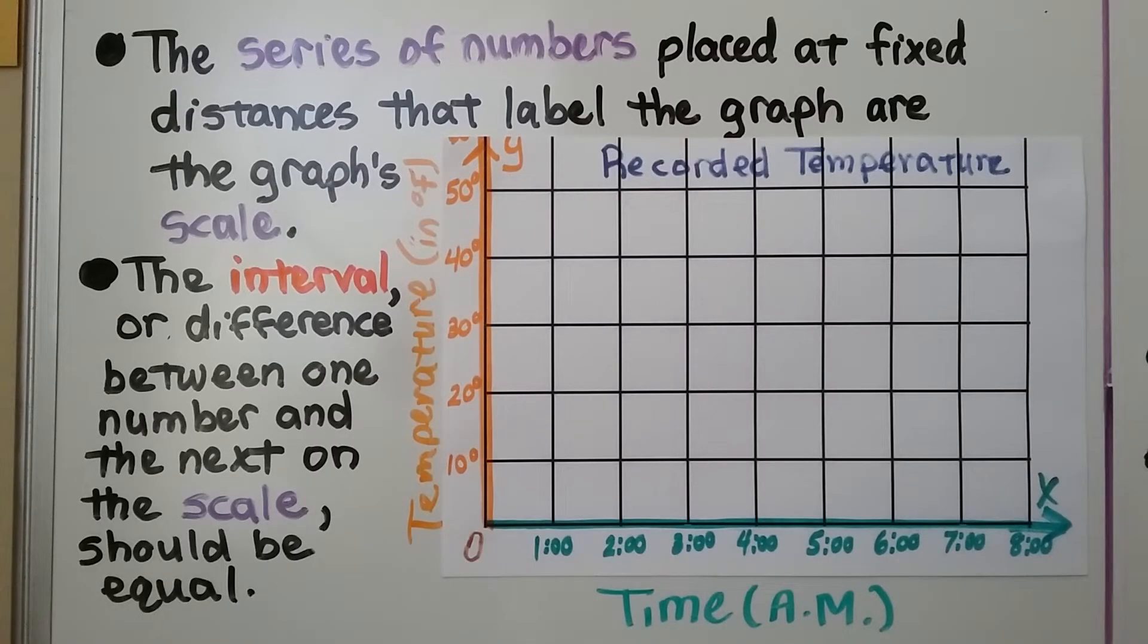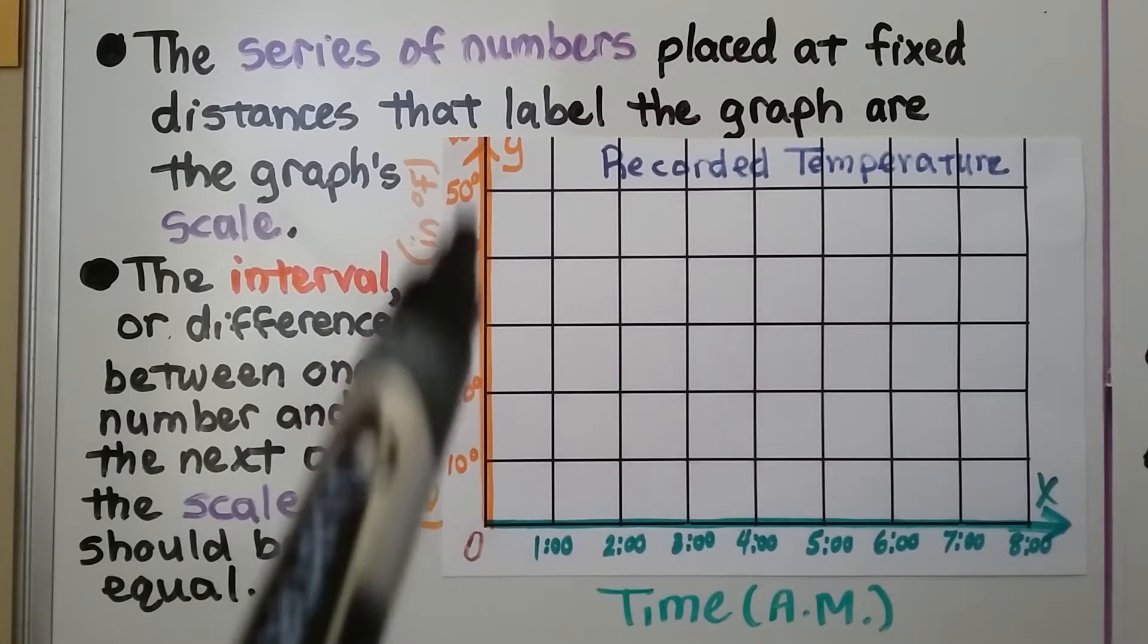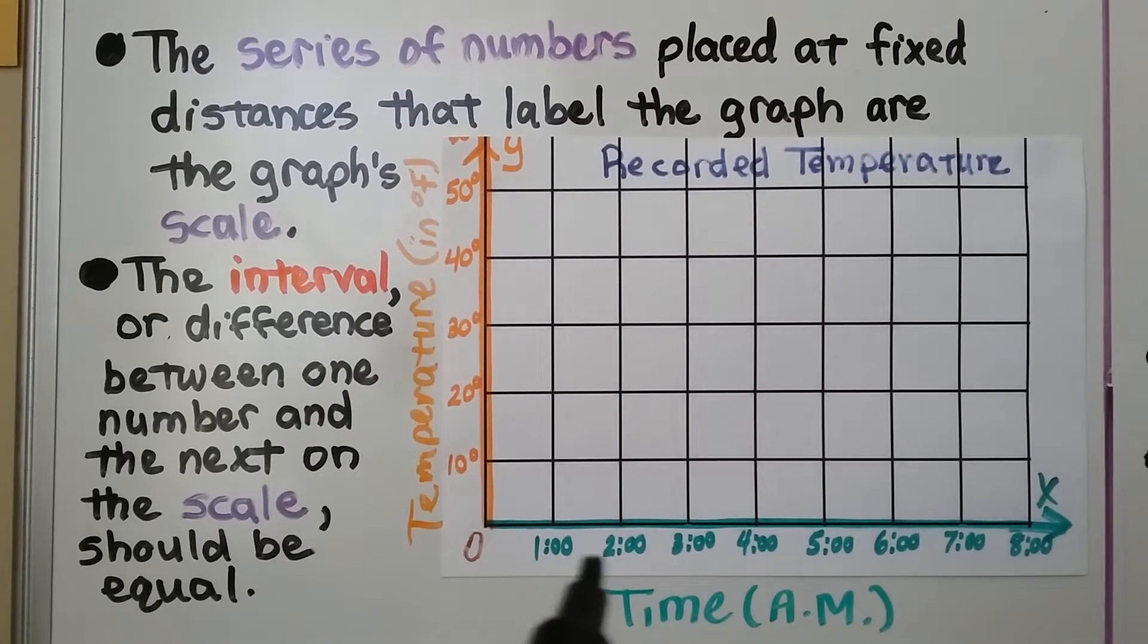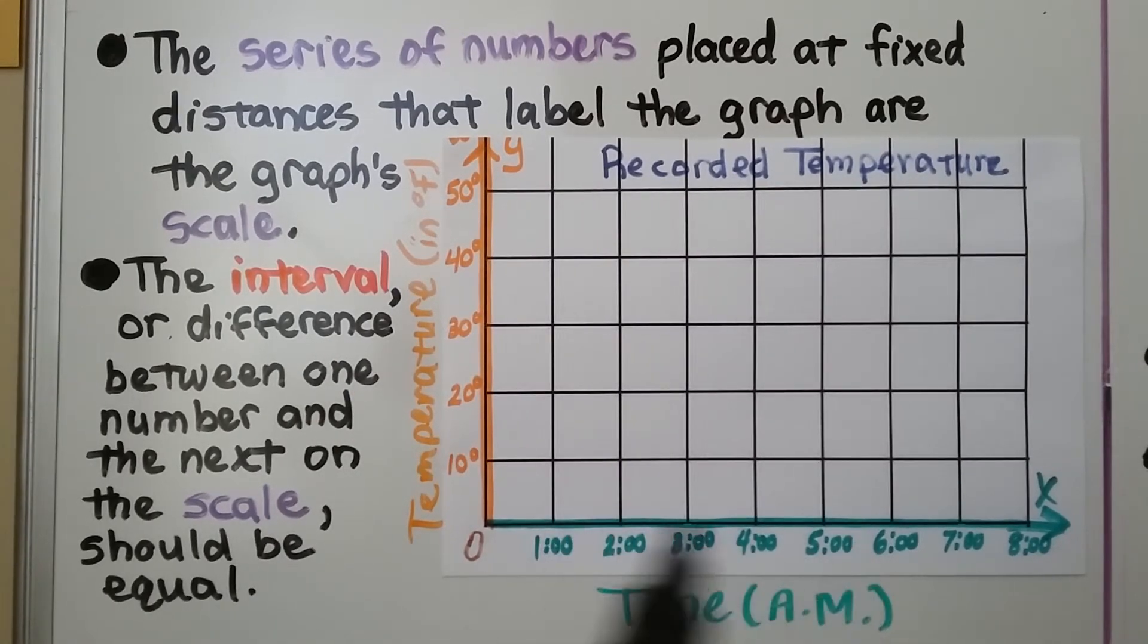The series of numbers placed at fixed distances that label the graph are the graph's scale. Here we have a scale in degrees Fahrenheit. Here we have a scale in time, in hours.